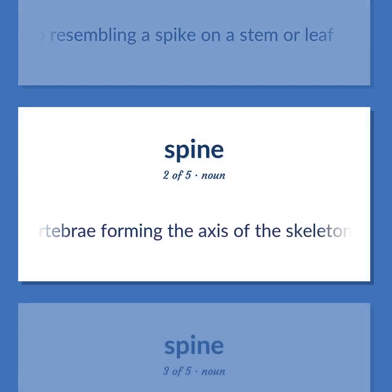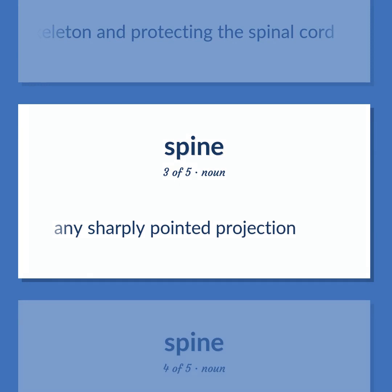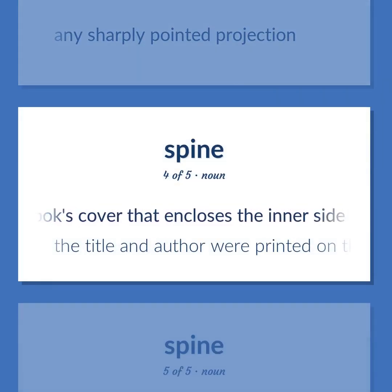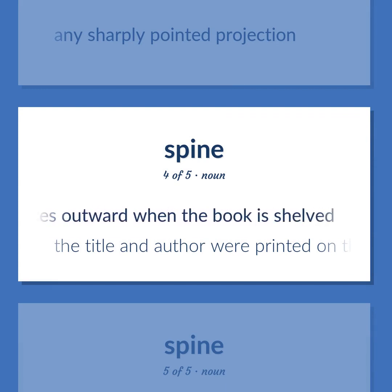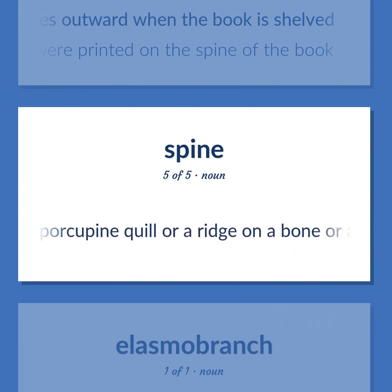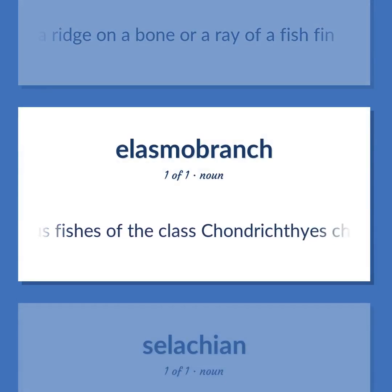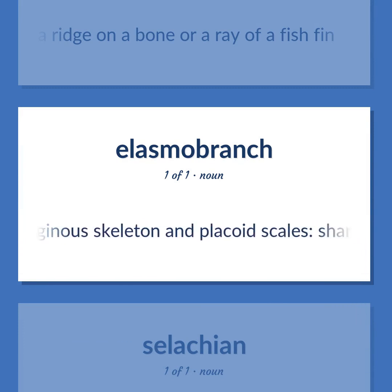Spine: the series of vertebrae forming the axis of the skeleton and protecting the spinal cord. Any sharply pointed projection. The part of a book's cover that encloses the inner side of the book's pages and that faces outward when the book is shelved — 'The title and author were printed on the spine of the book.' A sharp rigid animal process or appendage, as a porcupine quill or a ridge on a bone or a ray of a fish fin. Any of numerous fishes of the class Chondrichthyes, characterized by a cartilaginous skeleton and placoid scales: sharks, rays, skates.